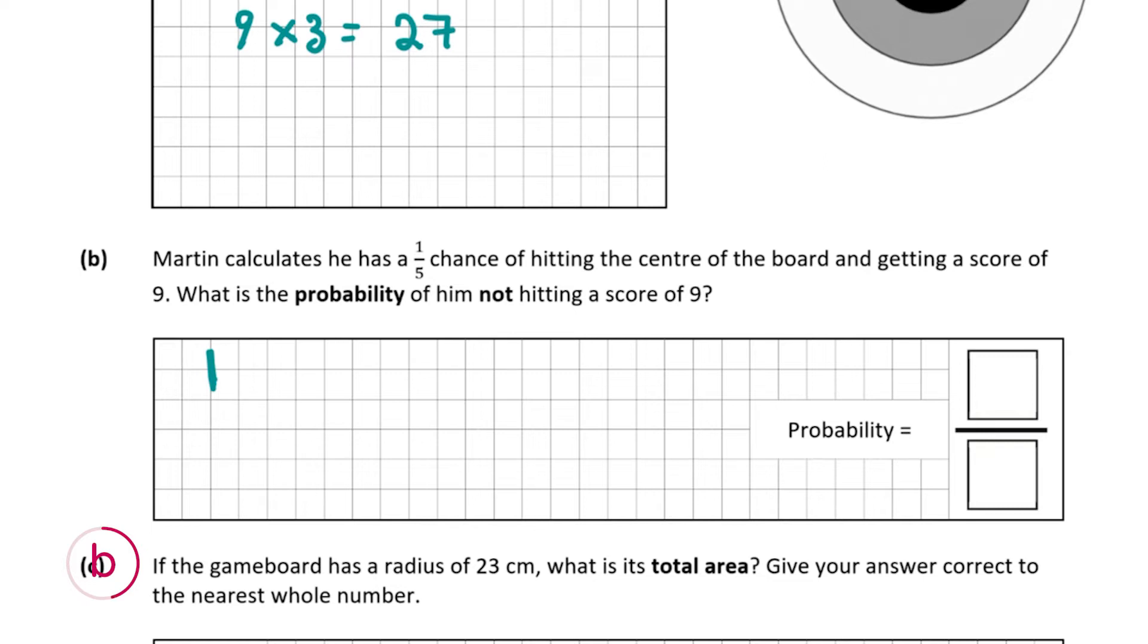If he hits the center of the board, he has a chance of one out of five. So we'll take that away to find the probability of him not hitting the center. 1 minus one-fifth leaves us with four-fifths. You can use your calculator for this if you prefer. So we fill in here four out of five.